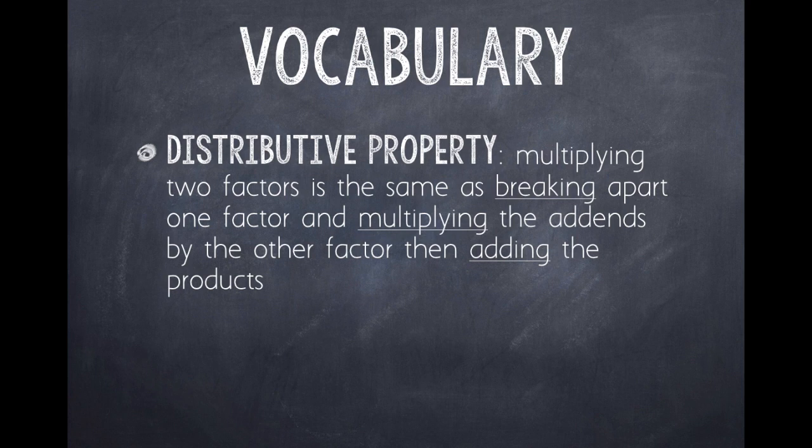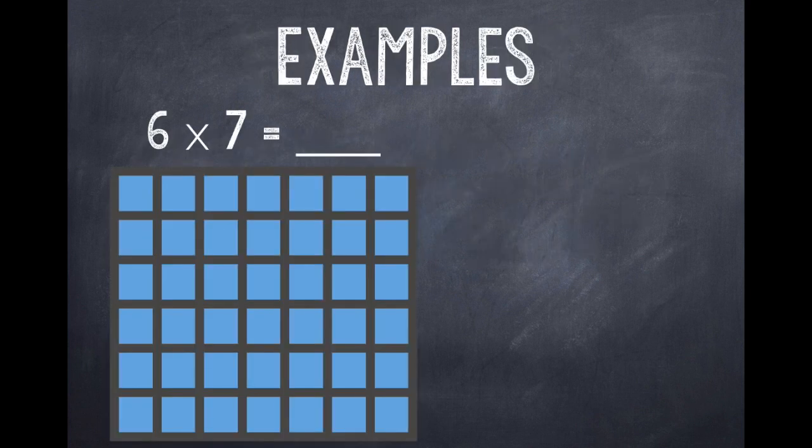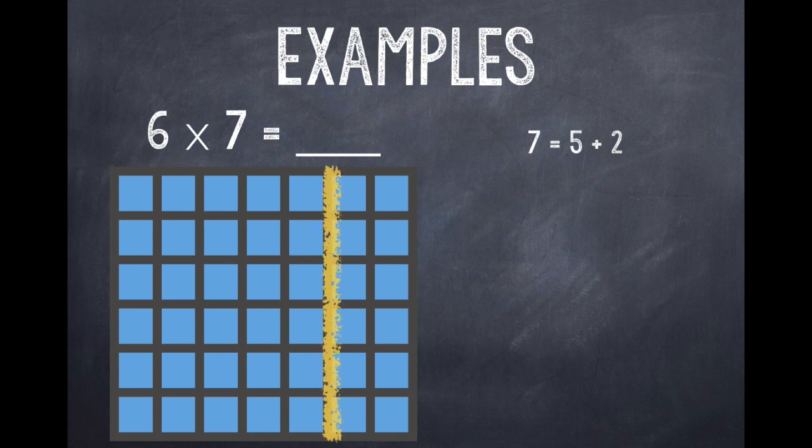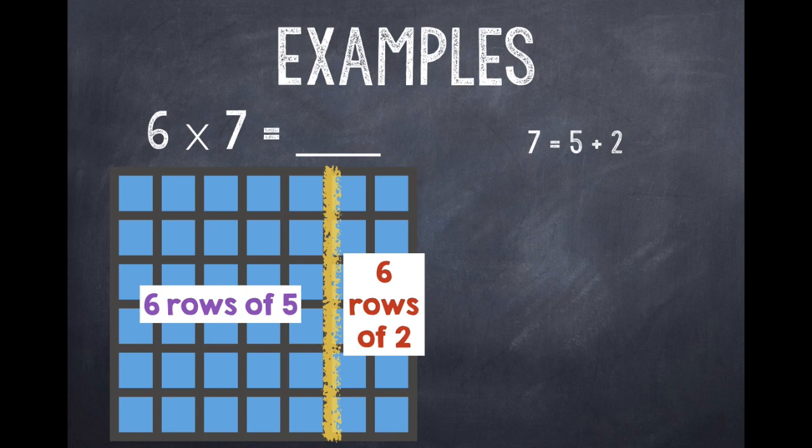So let's look at some examples. We're going to start with 6 × 7. And I drew an array to model this with 6 rows of 7. And I know that 7 can be broken into 5 and 2, because 7 is equal to 5 + 2. And I like multiplying with 5's and 2's because they're really easy for me to skip count with. And to show this on my array, I draw a line. So now I have 6 rows of 5 and 6 rows of 2.